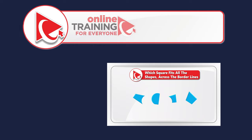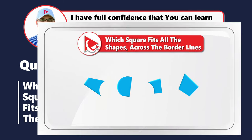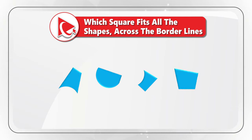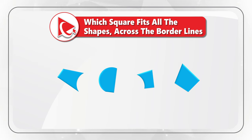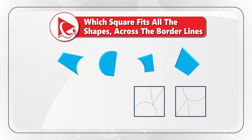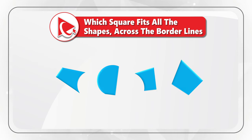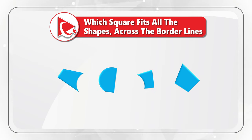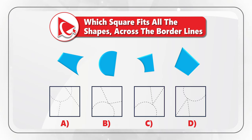This first question was initially designed to test your spatial reasoning, but also could be used to test your cognitive abilities and analytical skills. You're presented with four shapes, and you need to find the square which fits all the shapes across the borderlines. You need to select one square out of four possible choices based on the borderlines presented. Choices are A, B, C, and D.